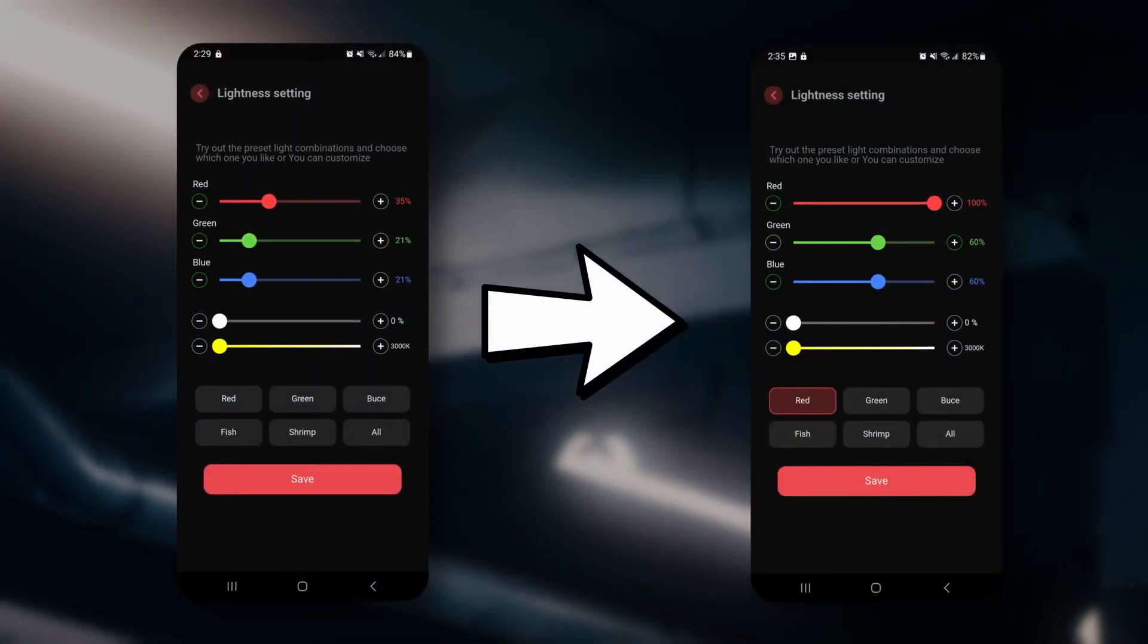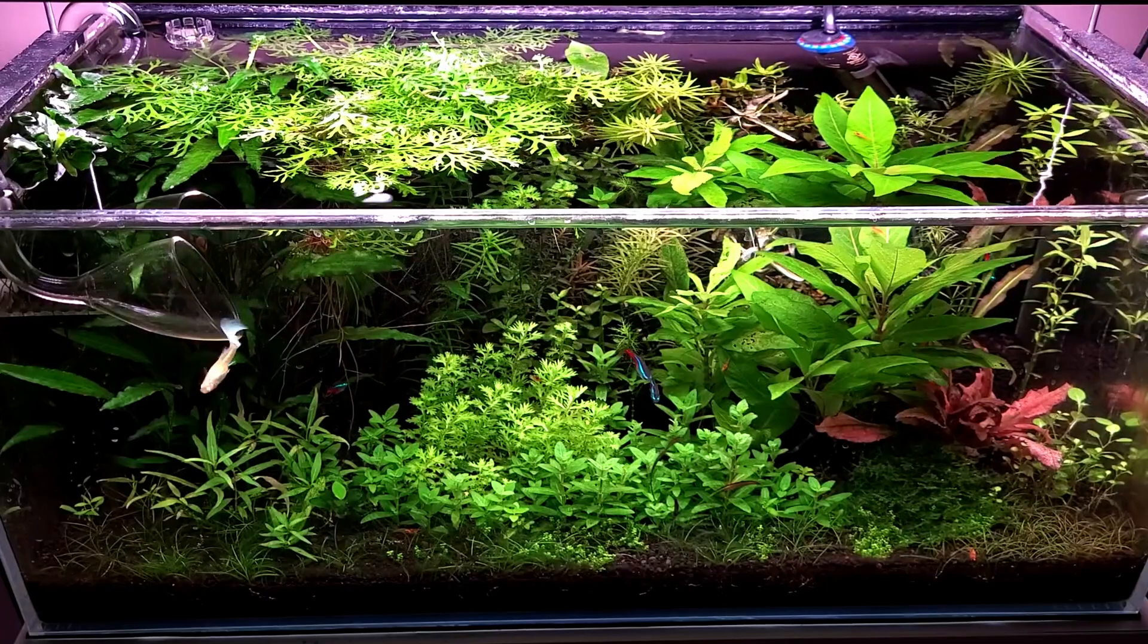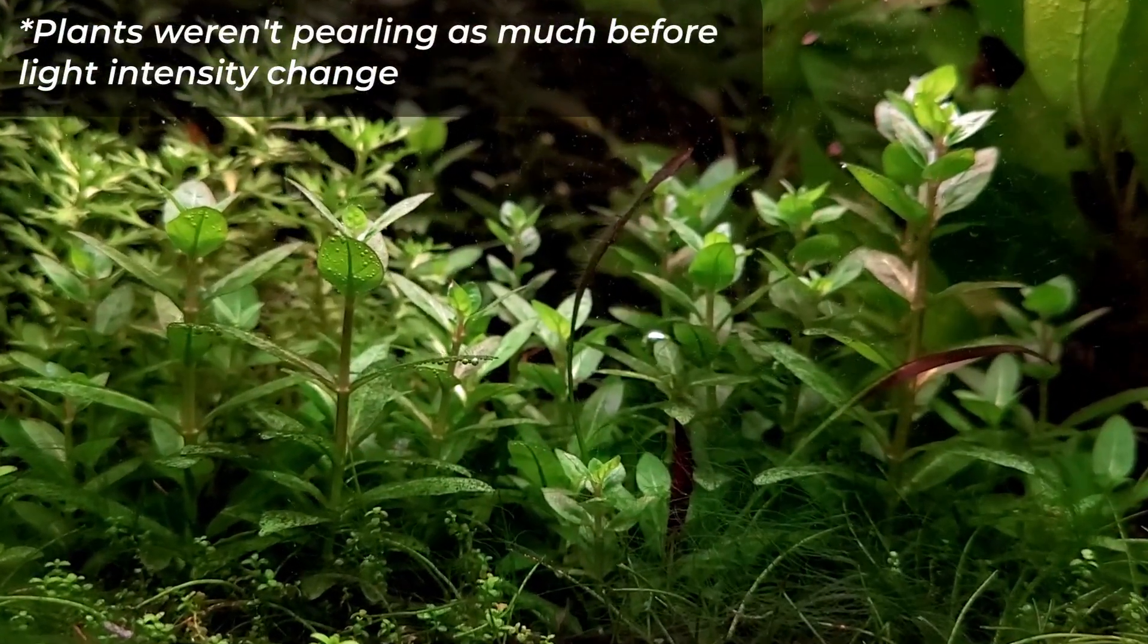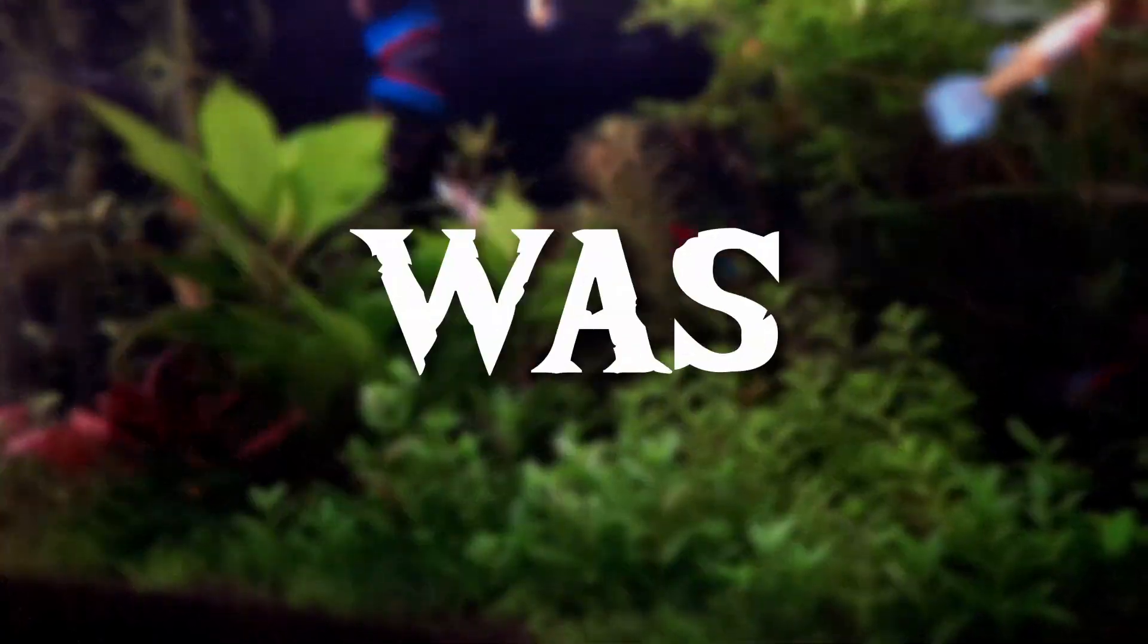I increased the light intensity through the use of a preset. You can easily see a difference. Every plant started to immediately pearl, and that was when I knew this was the right choice. Or was it?